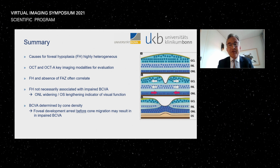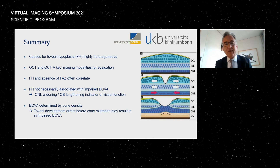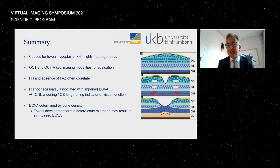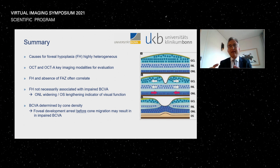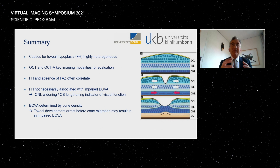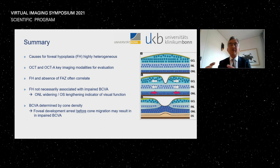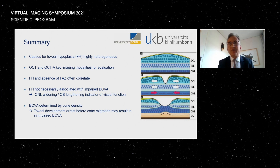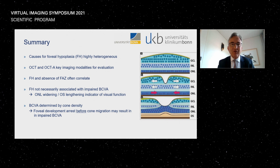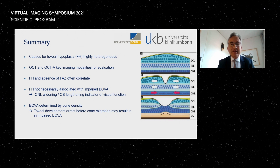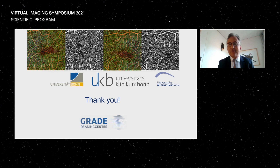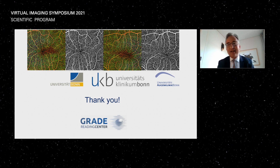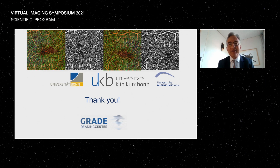BCVA is determined by cone density, and as shown by Wolf Hamling and Dr. Aml in AO quantification, cone density relates to where fixation takes place. Interestingly, the highest cone density may not be in the very center but outside it — so cone density is also affected in Alport syndrome through aberrant collagen 4 protein production. With this, I wish to thank you for your attention and again congratulate Stefan and his team for the fantastic VIS meeting 2021.